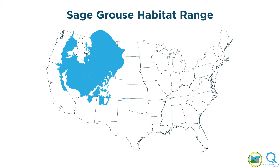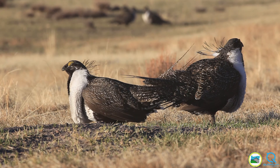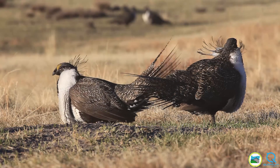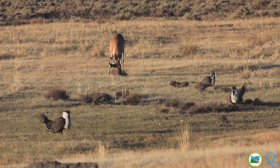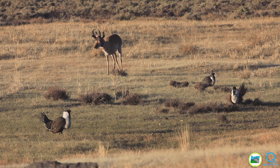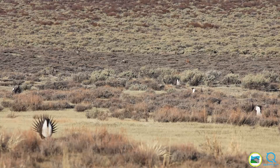Sage grouse range and population have dwindled. The decline is notable in a larger conservation context because sage grouse serve as an indicator species for the overall health of the entire sagebrush steppe ecosystem. These birds depend on sagebrush as a primary habitat characteristic.